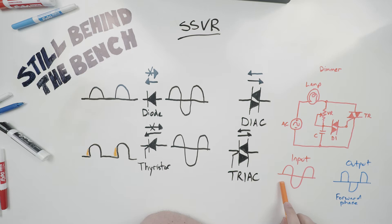So this is the input, this is what's coming from our source. And this is what your output looks like, you can see how the front portion of each wave is chopped off.